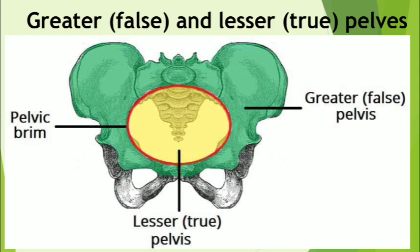So the pelvic brim is made up of the promontory and ala of the sacrum and the right and left linea terminalis — each composed of the arcuate line and the pectineal line. The pectineal line and pubic crest are formed by the superior border of the superior pubic ramus and body. At the inferior aspect, the pubic arch is formed by the ischiopubic rami. The width of the subpubic angle is determined by the distance between the right and left ischial tuberosities, measurable during a pelvic examination.